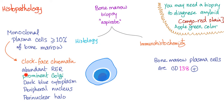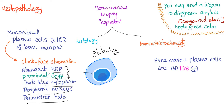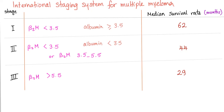Plasma cells under the microscope have clock-face chromatin, abundant rough endoplasmic reticulum, and a prominent Golgi apparatus — both because they produce lots of immunoglobulins, which are proteins. They have dark blue cytoplasm, a peripheral nucleus with a perinuclear halo — the white rim called the perinuclear halo — and sometimes vacuoles in the cytoplasm that are full of immunoglobulins.